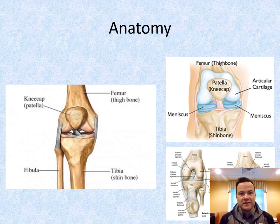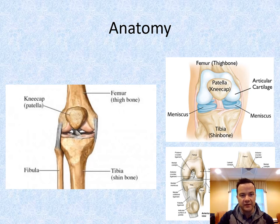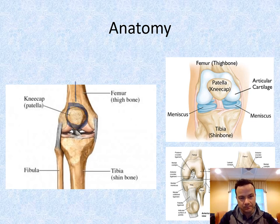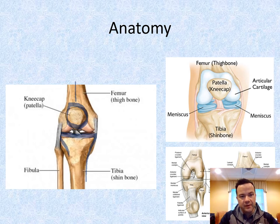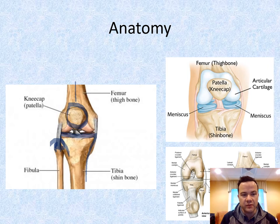In talking about knee pain, it's important to understand the anatomy of the knee. The knee is made up of three different bones. We have our longest bone in the body, the femur, coming down here from the center. We have our patella, also known as our kneecap, right here in the center. And then we have our tibia, this long bone that comes down our shin. Our fibula on the outside isn't technically part of the knee joint, although it is a supporting structure. The fibula is a non-weight-bearing bone on the lateral or outside part of our leg, but not typically classified as part of the knee joint.